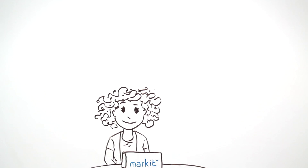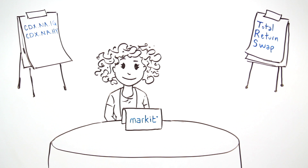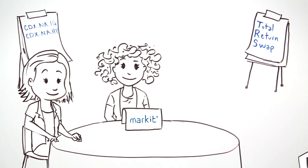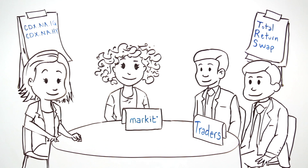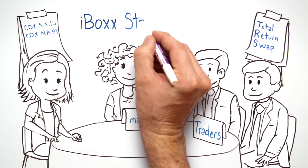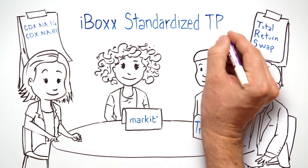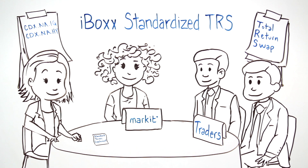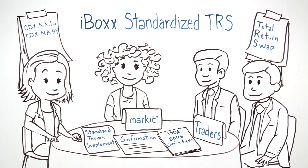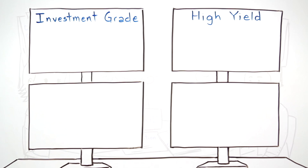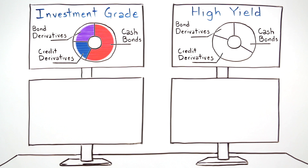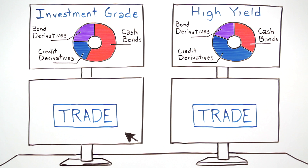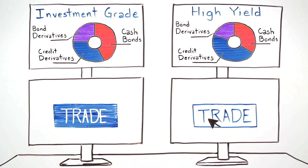Having experience in the derivative index space, the market partnered with a number of investment banks to develop iBOX standardized total return swaps. As standardized contracts linked to our iBOX rules-based index, they are unique. This makes it easy for investors to take long or short positions to transfer risk, and it makes it simple to trade between different market makers.